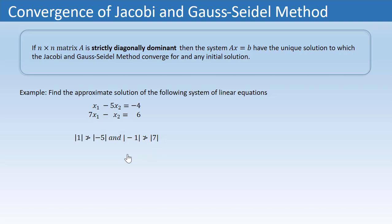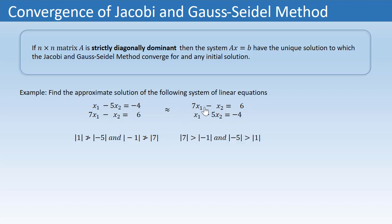From elementary algebra we know that applying a sequence of elementary row operations on any system of linear equations does not change its solution. So by swapping row 1 and row 2, an equivalent system can be written. The coefficient matrix of this new system is strictly diagonally dominant because |7| > |−1| and |−5| > |1|, which ensures this system must have a unique solution and that Jacobi or Gauss-Seidel should converge to it.